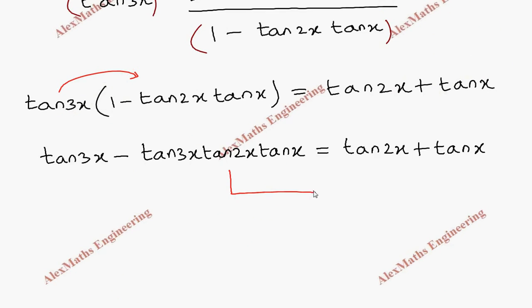Now this entire term we take to the other side, and these two terms we bring to the left-hand side. So tan(3x) minus tan(2x) minus tan(x) equals tan(3x)tan(2x)tan(x).